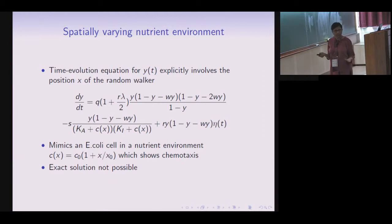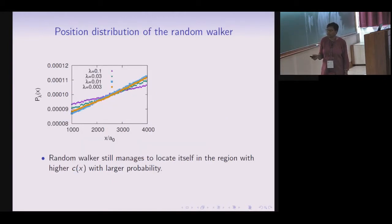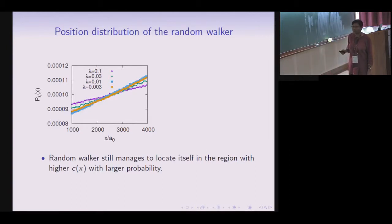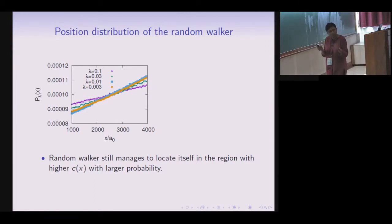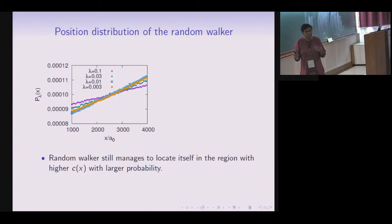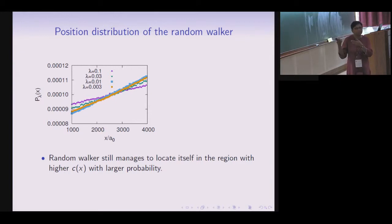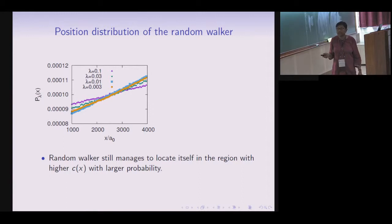In the presence of a nutrient concentration gradient, the time evolution equation for y includes a term c(x) representing nutrient concentration; we use a linear nutrient profile. In this case we cannot solve exactly, so we use numerical simulation. One interesting result is the position distribution of the random walker, which shows a linear dependence just like the nutrient concentration. This demonstrates that even our simple run-tumble description preserves chemotactic ability — the cell is present with higher probability where there is more food.